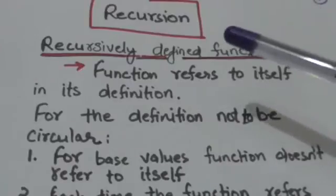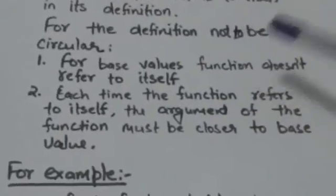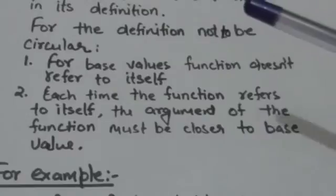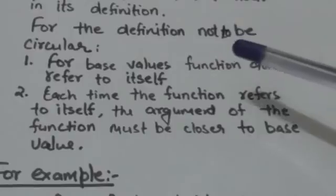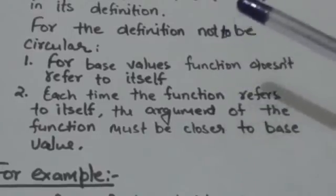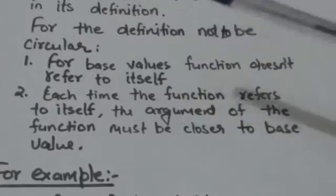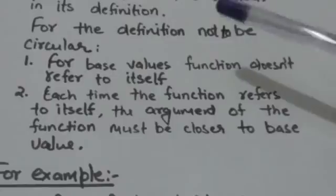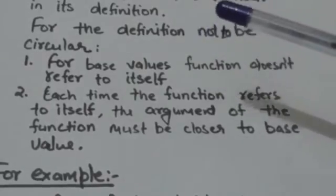A recursively defined function must have these two properties in order for the definition not to be circular. First property is for certain arguments, the function does not refer to itself. These arguments are called base values.